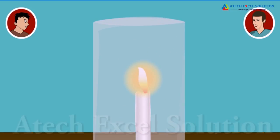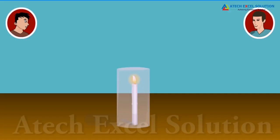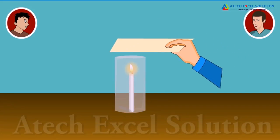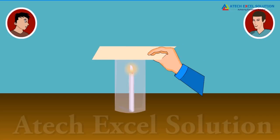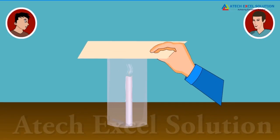What do you observe? I can see that the candle is burning very nicely. Now remove the blocks and place the chimney over the table, and put the glass plate over the chimney. What do you observe? This time, the candle flickered, gave smoke, and stopped burning. What did you understand from this activity? I understood that air is necessary for combustion, Dad.